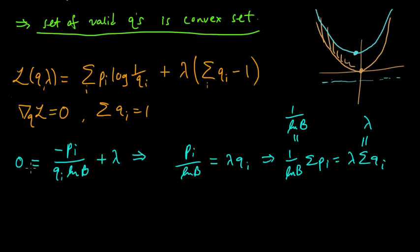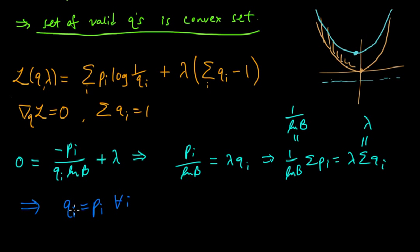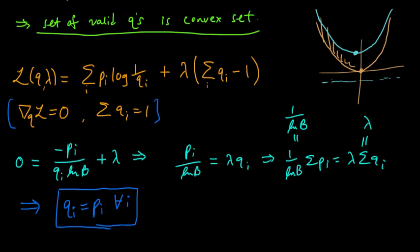Now let's plug lambda = 1/ln(b) back in. That cancels, and we just get that pi equals qi — or in other words, qi equals pi for all i. So this is the unique solution to these equations. It's as simple as could be: we just take the qi's to be the pi's.